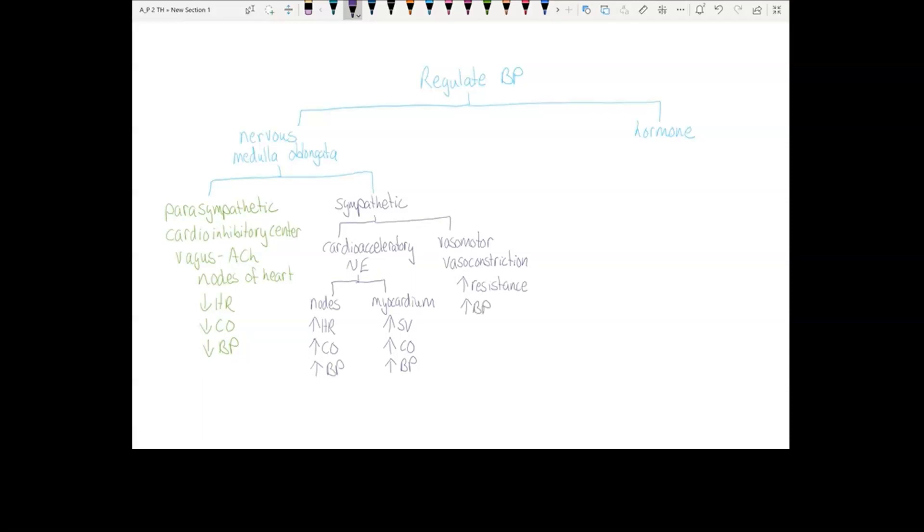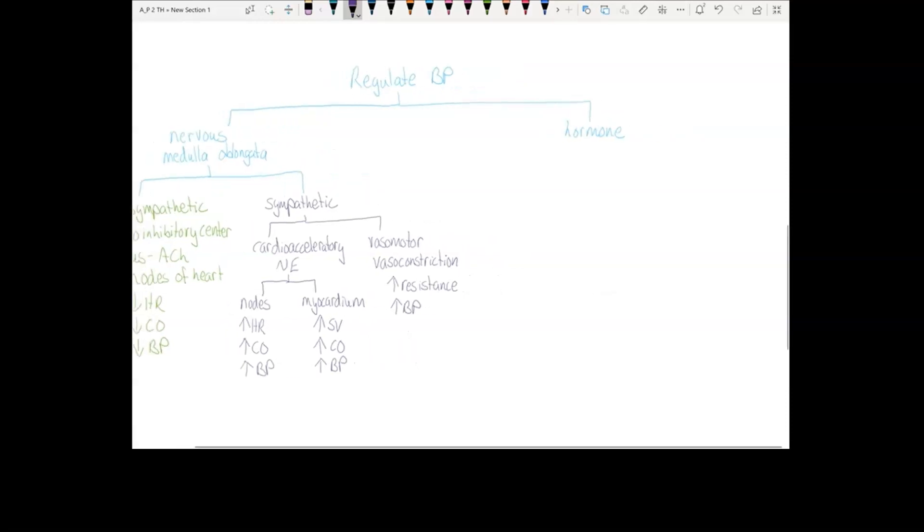So there is your nervous regulation through parasympathetic and sympathetic. With hormone, we also have two different options.